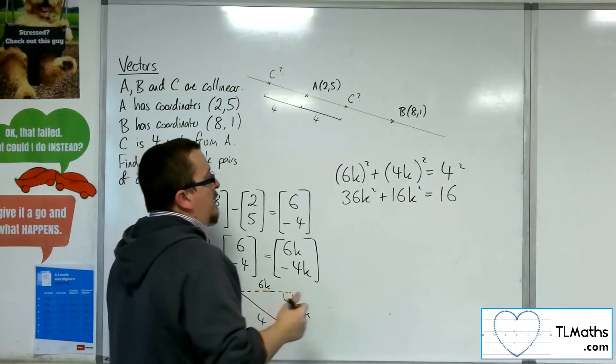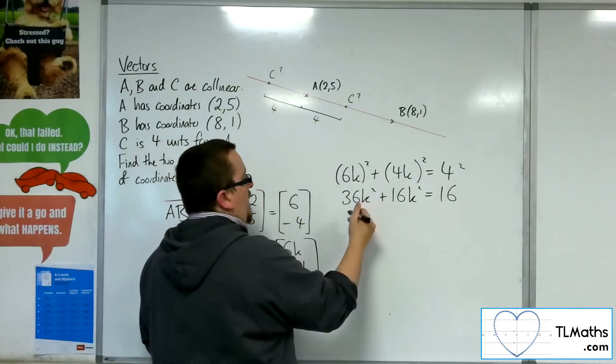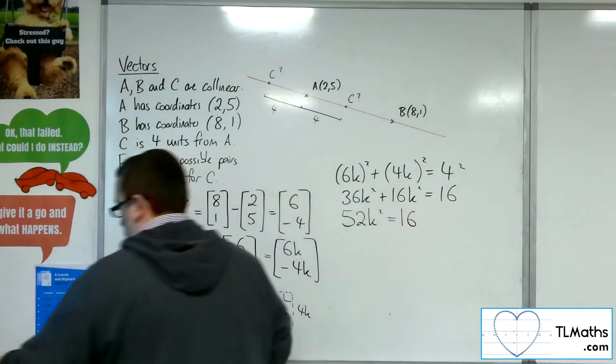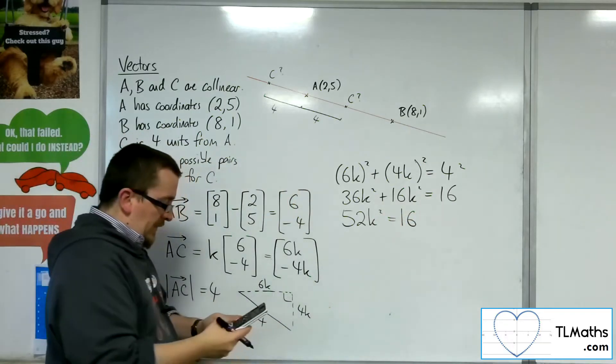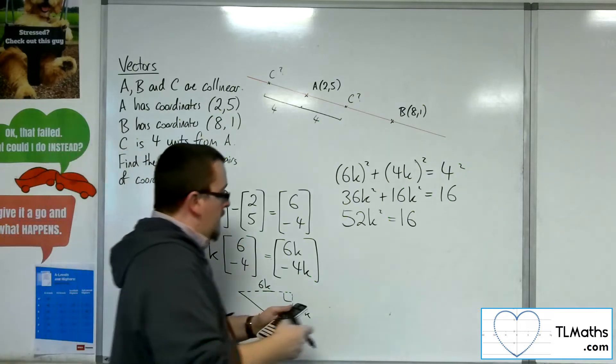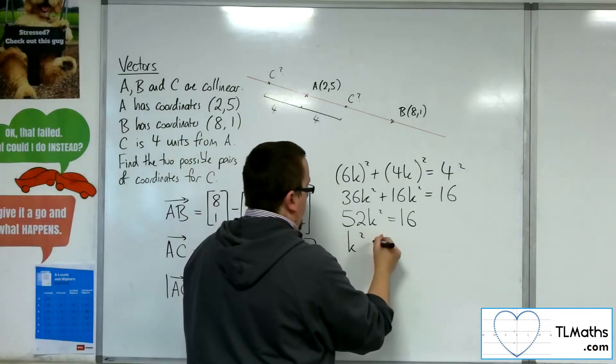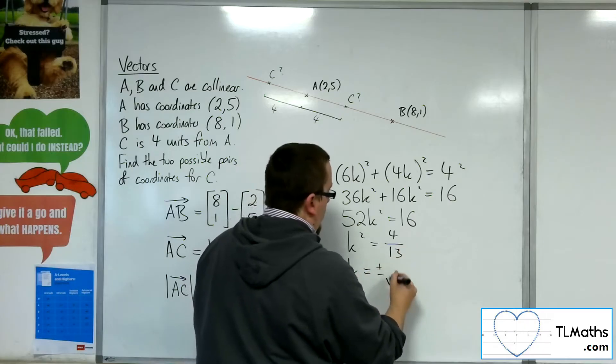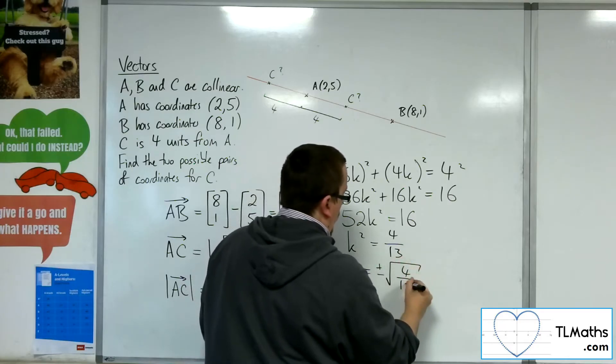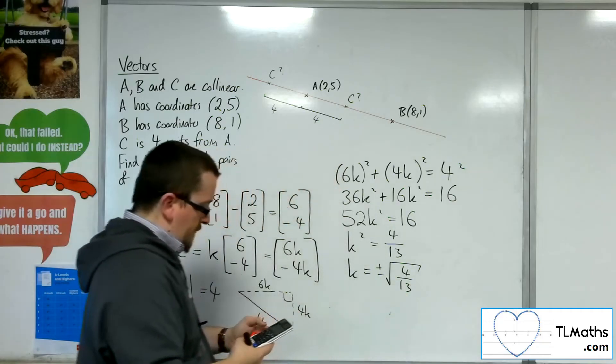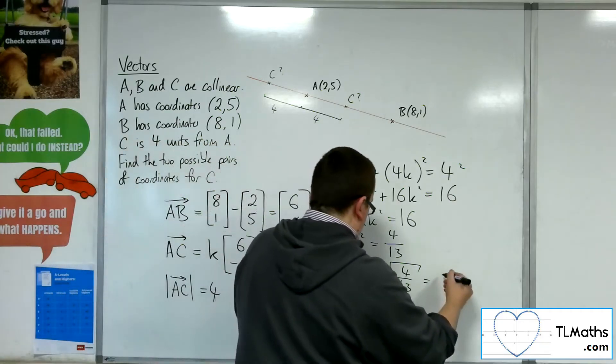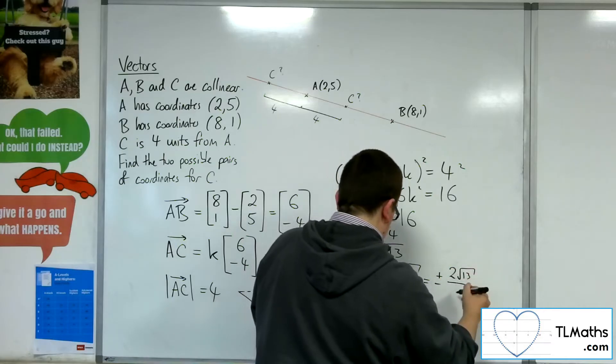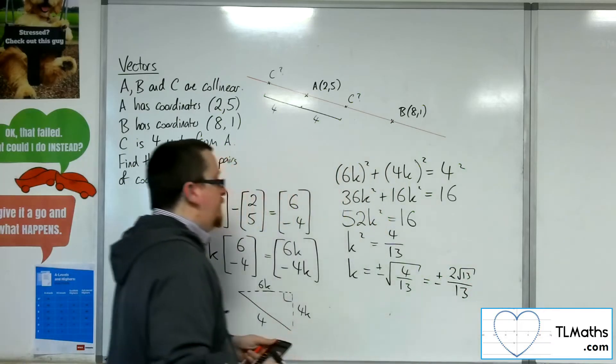So this gets me 36K squared plus 16K squared is equal to 16. So 36 and 16 is 52. So then 16 divided by 52 is 4 thirteenths. And so K is plus or minus the square root of 4 thirteenths, which simplifies to plus or minus 2 root 13 over 13.